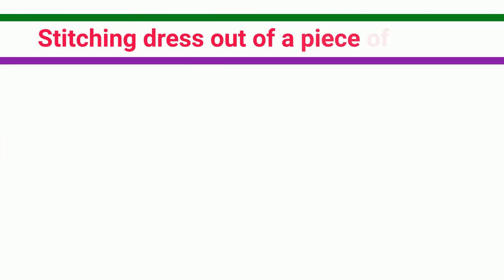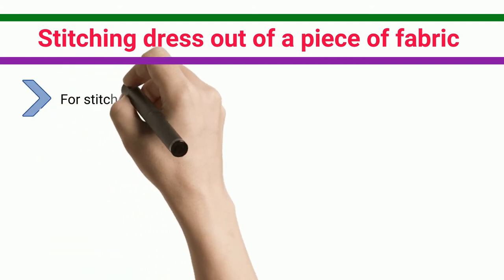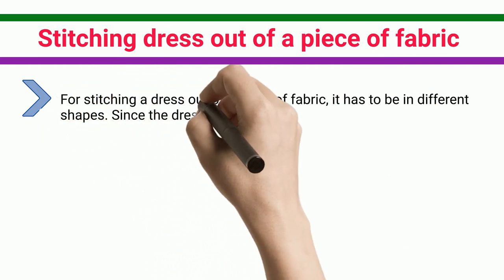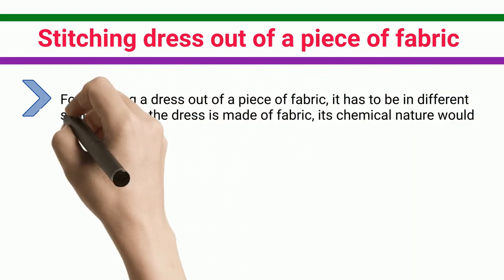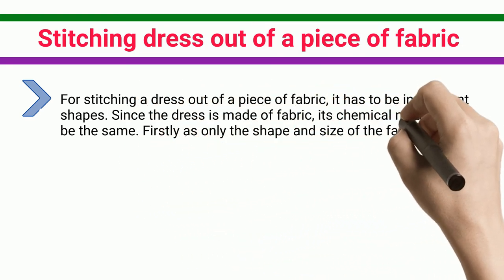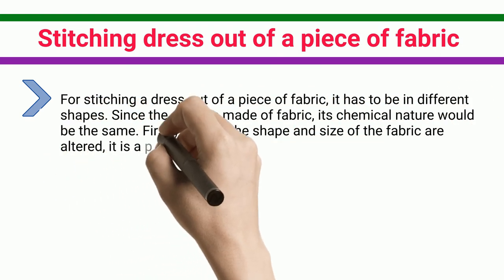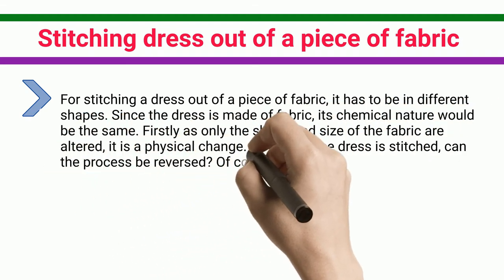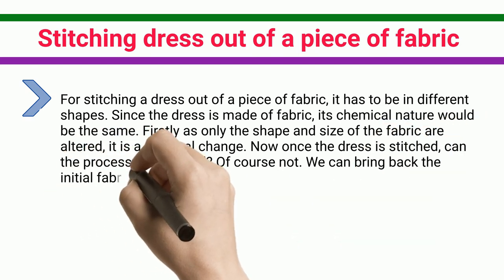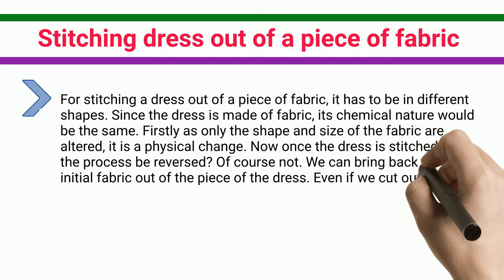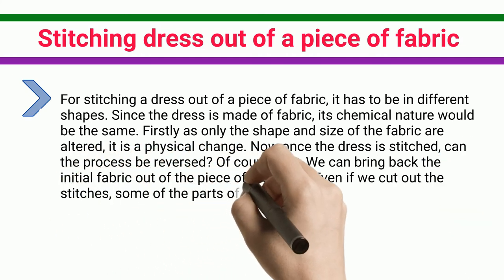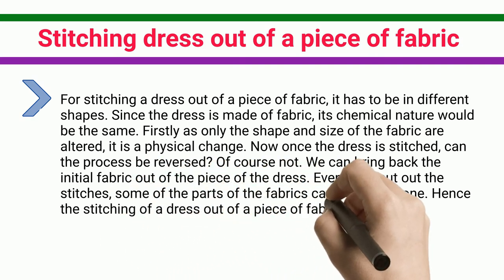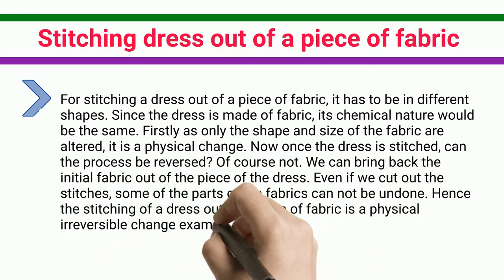Stitching a Dress Out of a Piece of Fabric. For stitching a dress out of a piece of fabric, the fabric has to be cut into different shapes. Since the dress is made of fabric, its chemical nature remains the same. As only the shape and size of the fabric are altered, it is a physical change. Once the dress is stitched, the process cannot be reversed. Even if we cut out the stitches, some parts of the fabric cannot be undone. Hence, stitching a dress out of a piece of fabric is a physical irreversible change example.